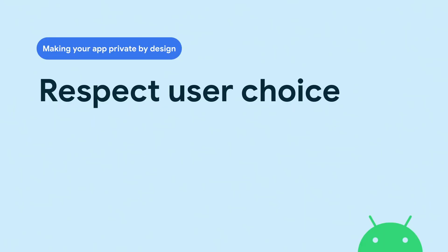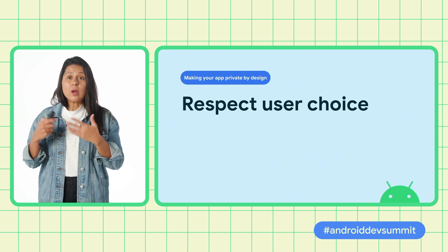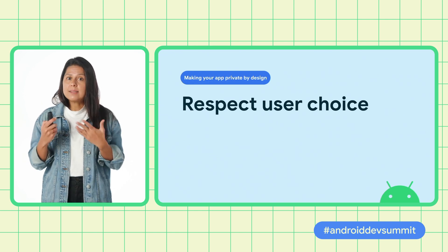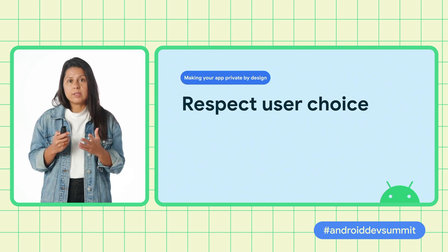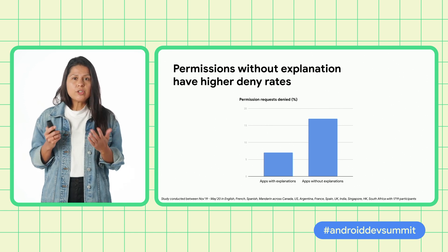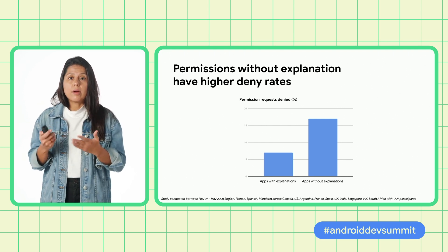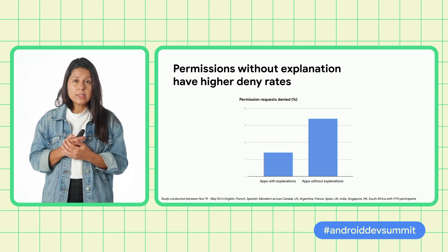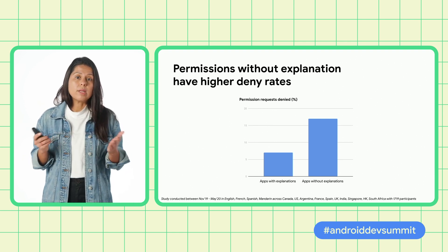Moving to our second best practice: respect the user's choice. Android offers users controls that provide means for them to make informed decisions about who can access their private data and how much access they're willing to share. It's about balancing choice with safe defaults. Our research shows that the more informed users are about why apps need access to their data, the more likely they are to engage. One recent study showed users are less likely to deny permissions when requests include a rationale. It is critical that you explain to users why you need access to their data.